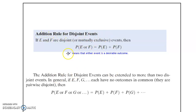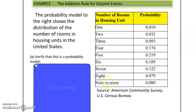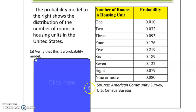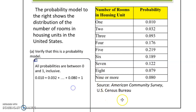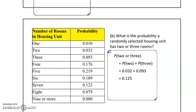Or means either event is a desirable outcome — either one is acceptable. In this case, this is a probability model; we can verify that it's a probability model because all the probabilities add together to give us 1. We're looking for the probability that a randomly selected housing unit has 2 or 3 rooms — that's these two values, which we add together to get our probability.